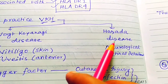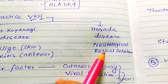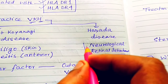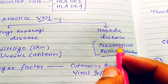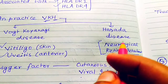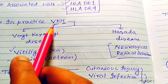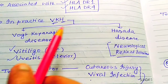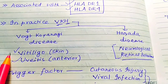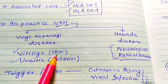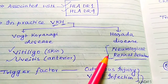Harada disease involves neurological symptoms and retinal detachment. The retina will be detached and neurological symptoms will be present. So in clinical practice, Vogt-Koyanagi gives vitiligo and anterior uveitis, while Harada gives neurological symptoms and retinal detachment.